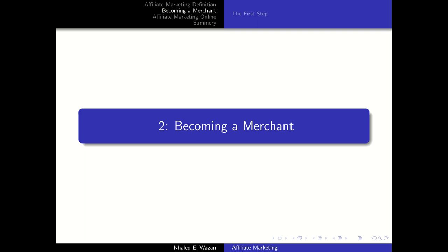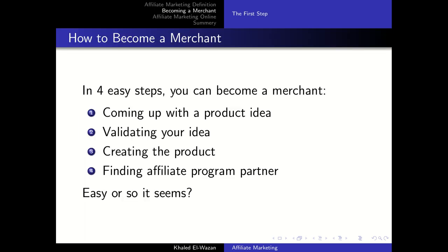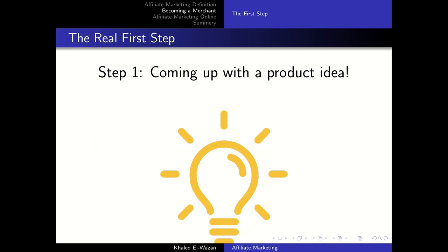Building enough traffic to make a meaningful income just from affiliate sales isn't quick or easy. But first, let's see what are the main steps to become a merchant: first, coming up with a product idea; second, validating your idea; third, creating the product; and fourth, finding affiliate program partners.